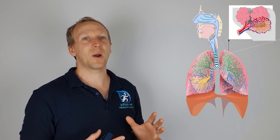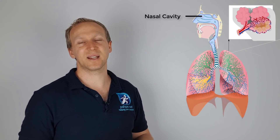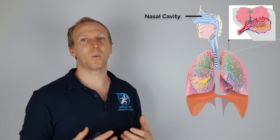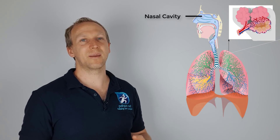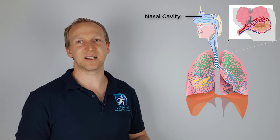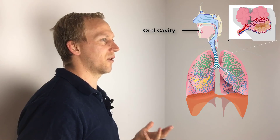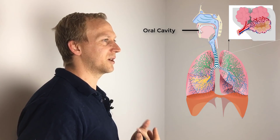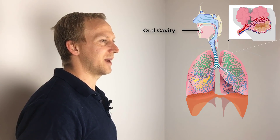When looking at the structure and function of the lung, let's have a look at this image and work our way down from the top. The nasal cavity is where the air comes in — it's warmed and particles are filtered out by the hairs in your nostrils. There's also the oral cavity where you can breathe air in through your mouth.